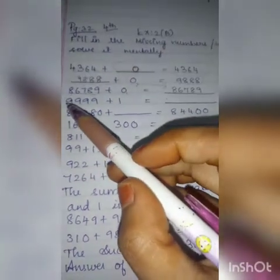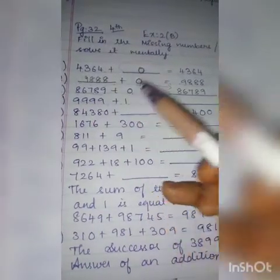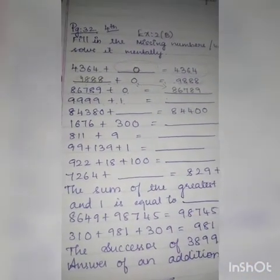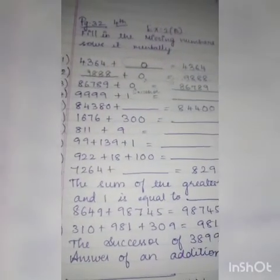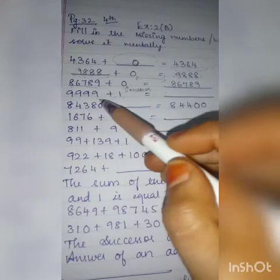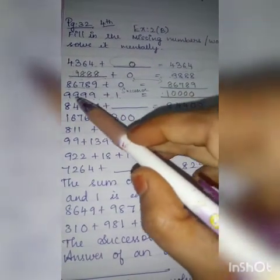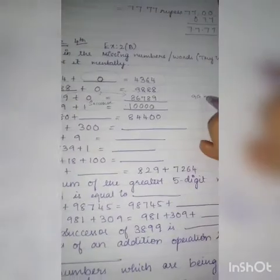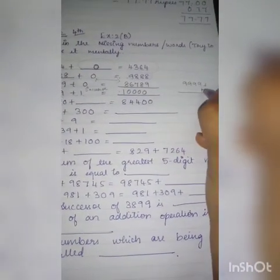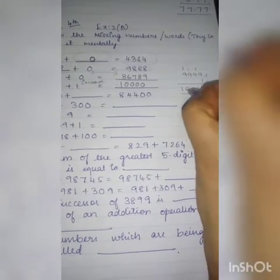Fourth question: 9,999 plus 1. What is the actual meaning? 9,999 plus 1 means we are going to find the successor. The successor of the greatest four-digit number is the smallest five-digit number. You can add and see: 9,999 plus 1 — 9 plus 1 is 10, carry 1; 9 plus 1 is 10, carry 1; 9 plus 1 is 10, carry 1; 9 plus 1 is 10. So you are getting a 5-digit number — the smallest five-digit number.